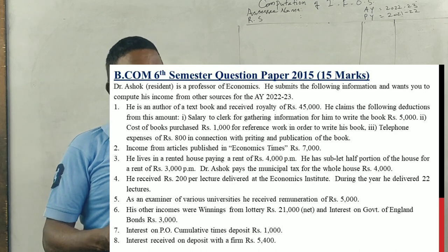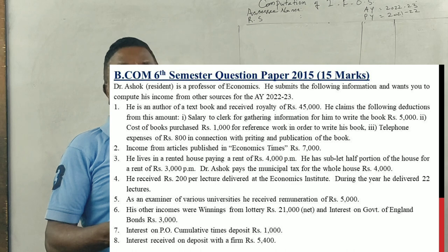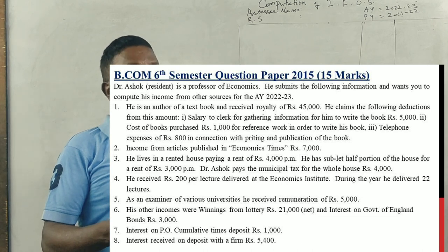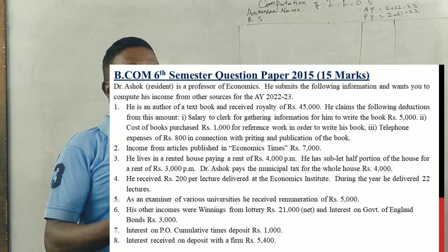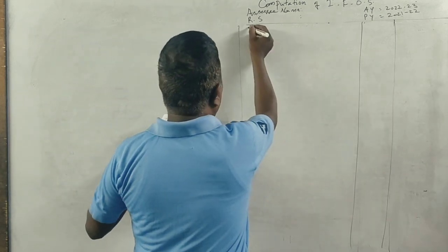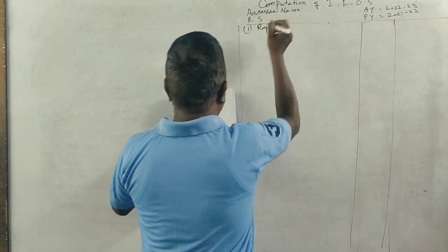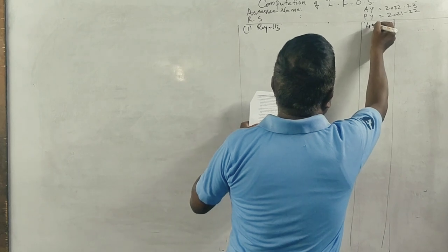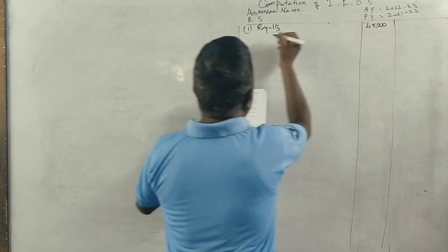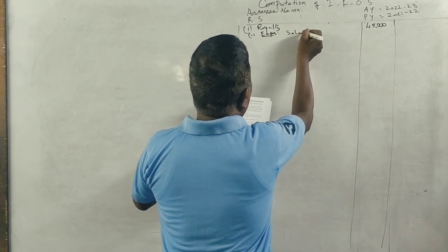Assessment year 22-23. He is an author of a textbook and received a royalty of Rs. 45,000. He claims the following deductions: salary to clerk Rs. 5,000, cost of books Rs. 1,000, and telephone expenses Rs. 800 in connection with the printing and publication of the book. So totally he is receiving a royalty from a book of Rs. 45,000, from which he incurs these expenses.